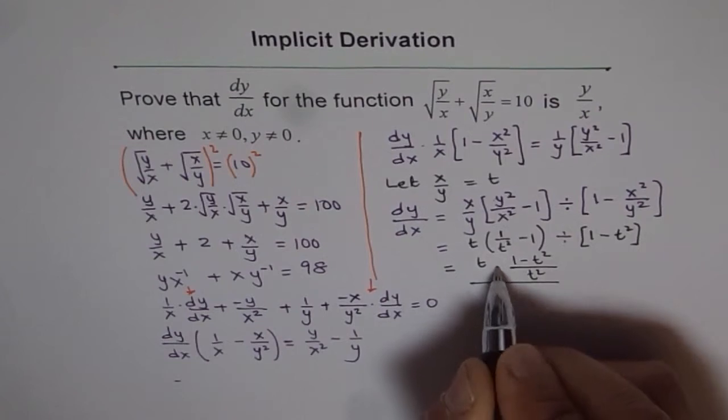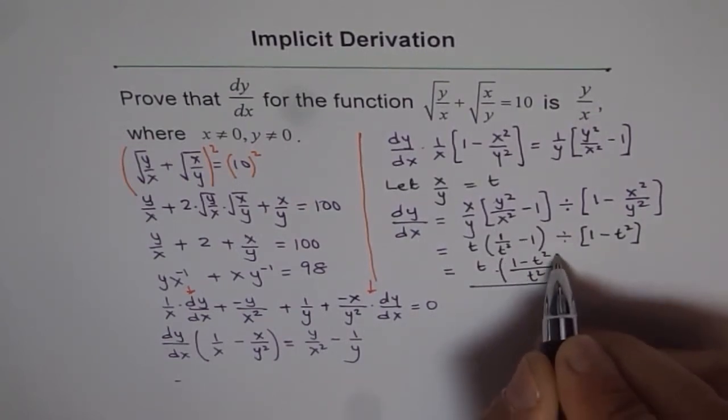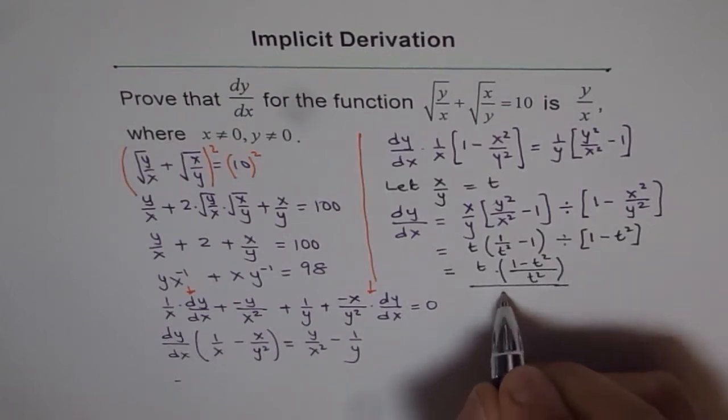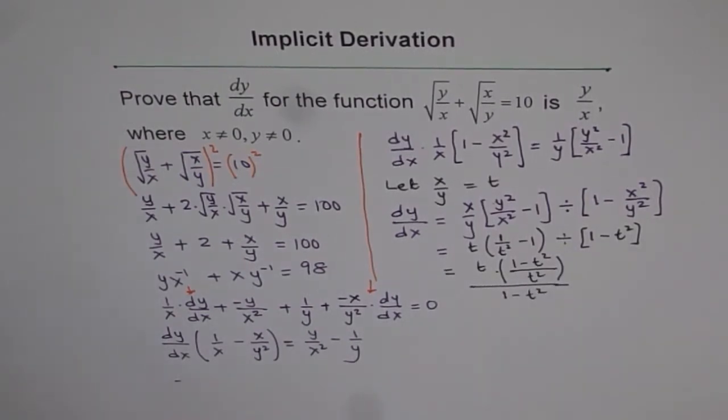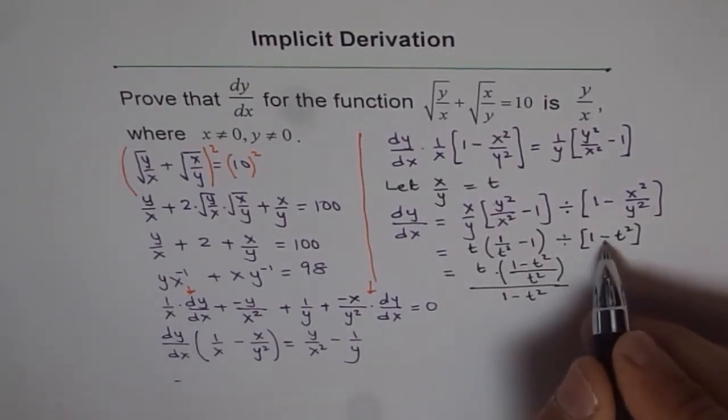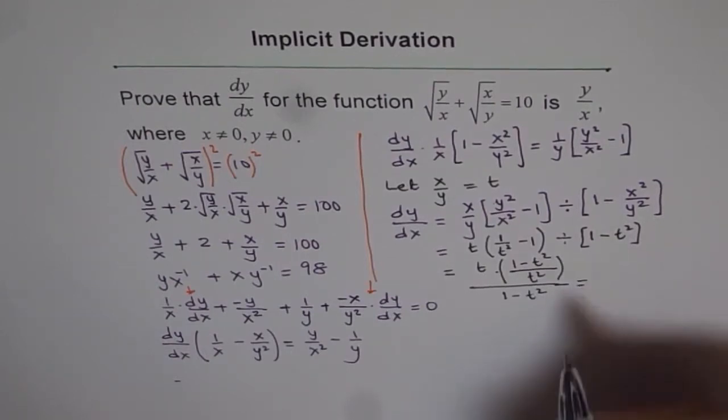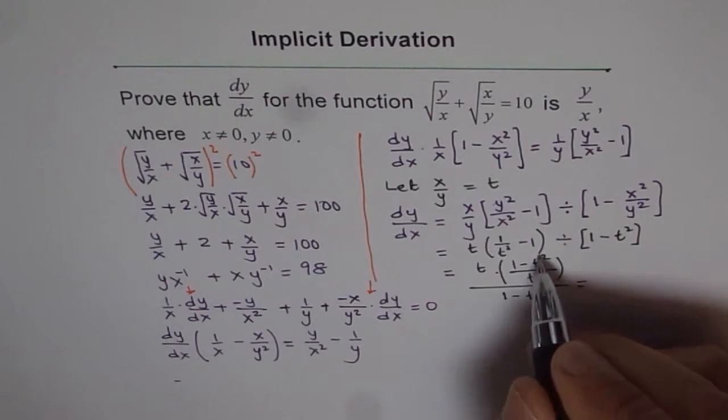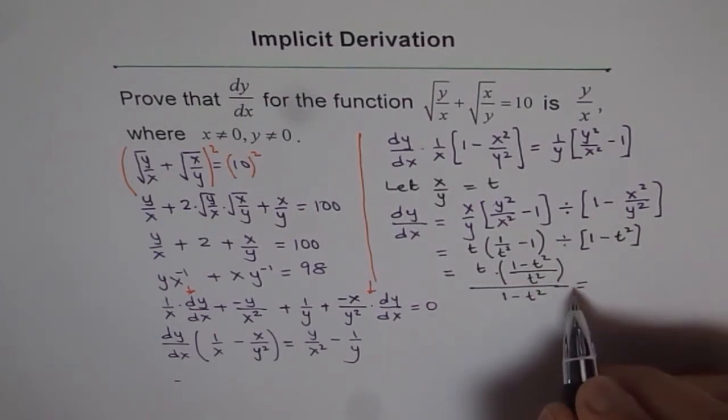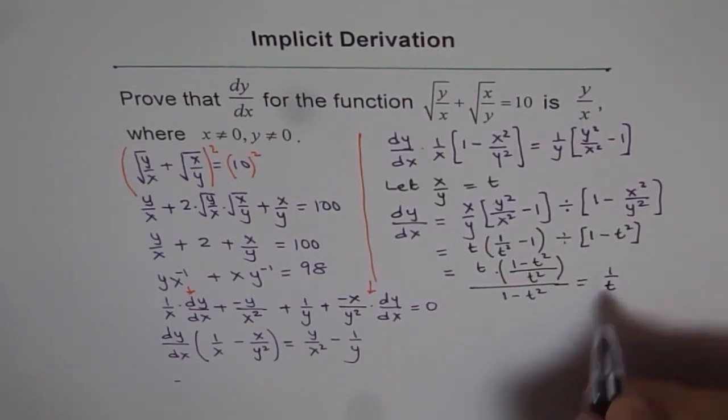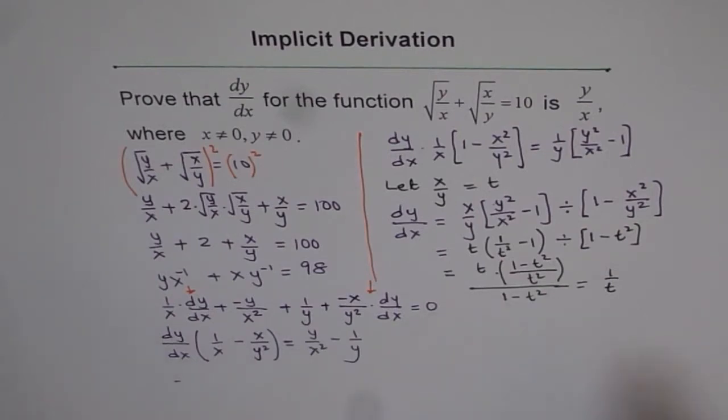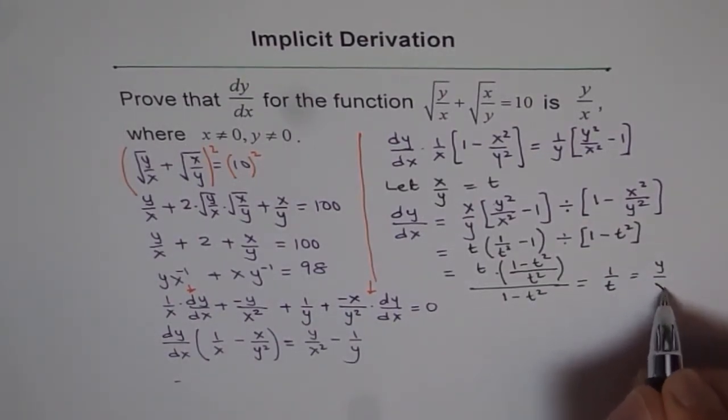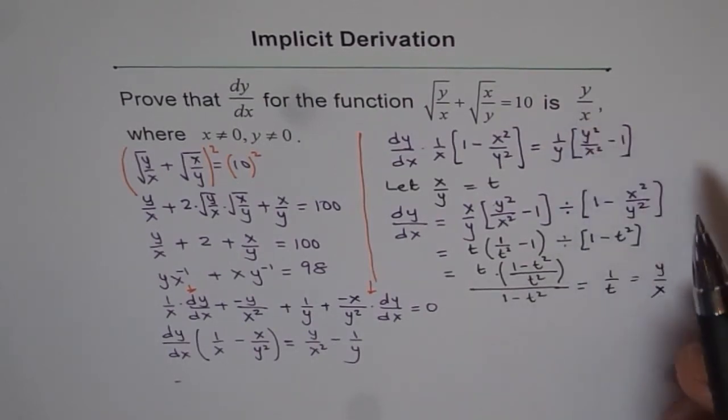Divided by (1 - t²). This is this term brought downwards. And now I can cancel (1 - t²). You can see (1 - t²) can be cancelled. And t/t² is actually 1/t. Do you see that? So once you simplify, you get 1/t. And 1/t is y/x. And that is the result we were looking for.